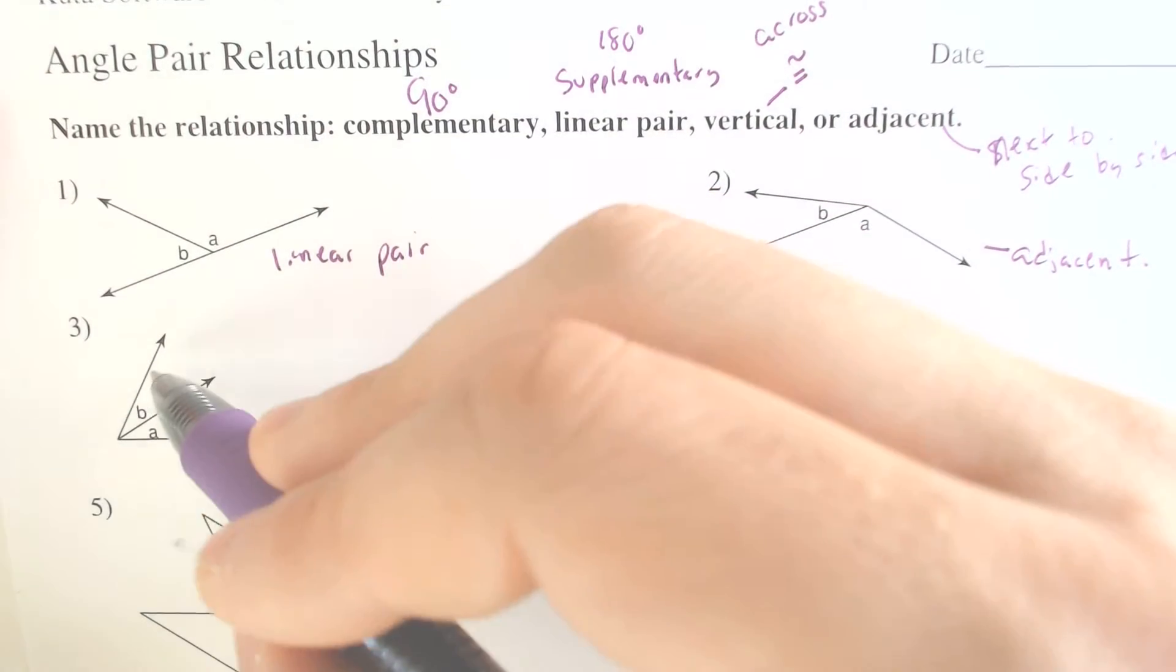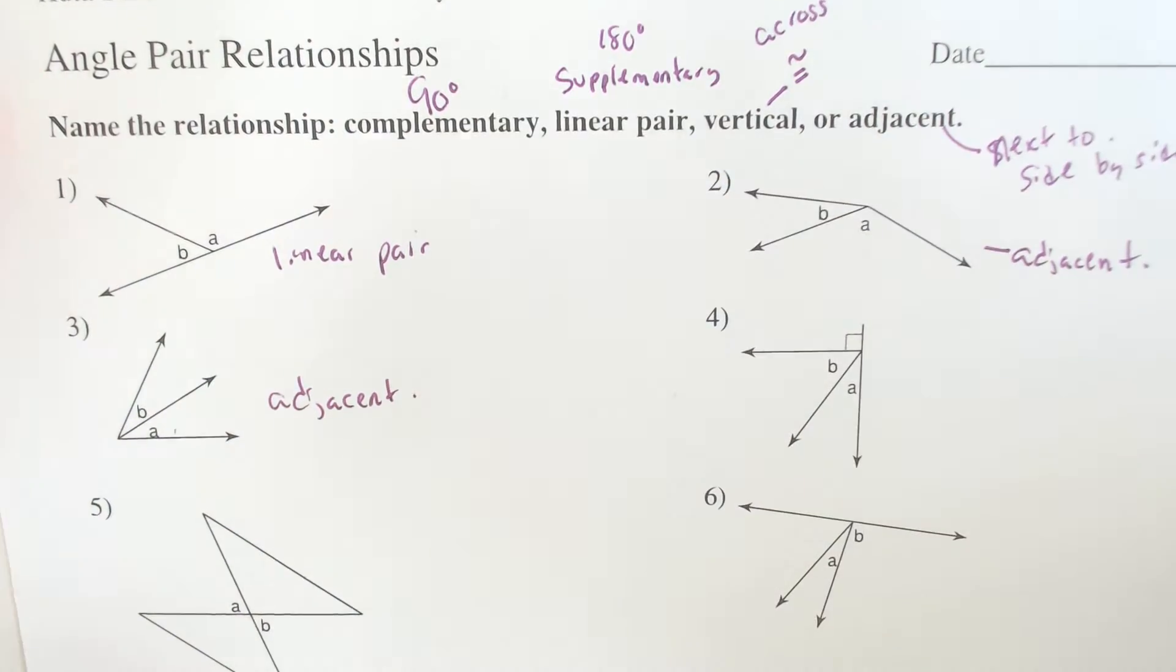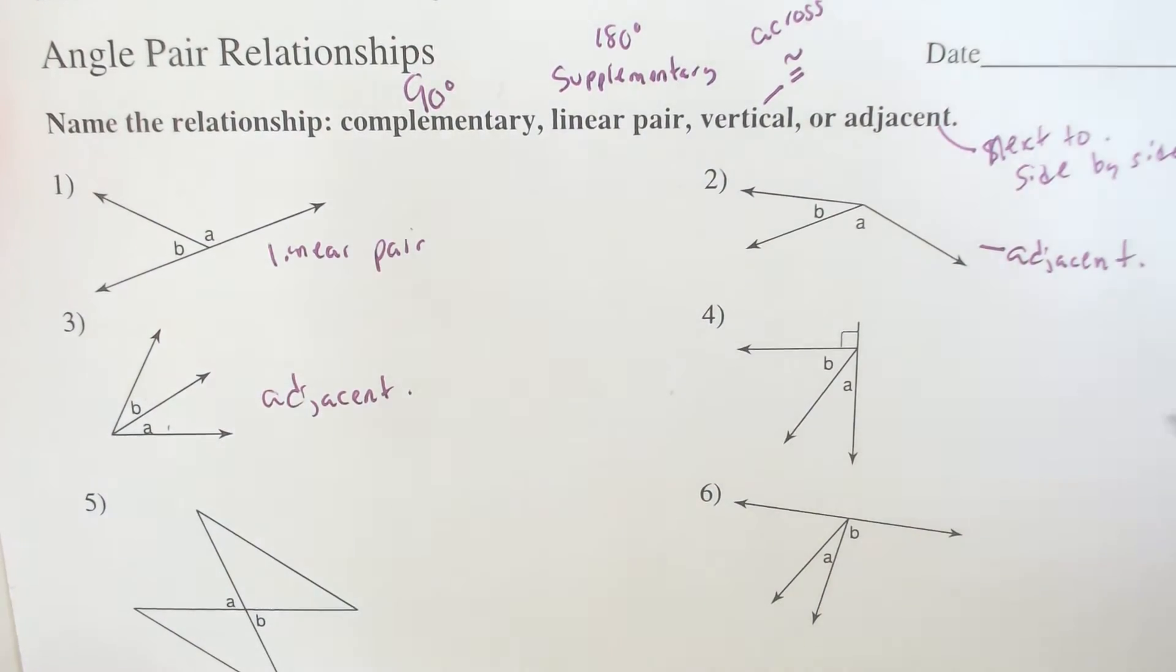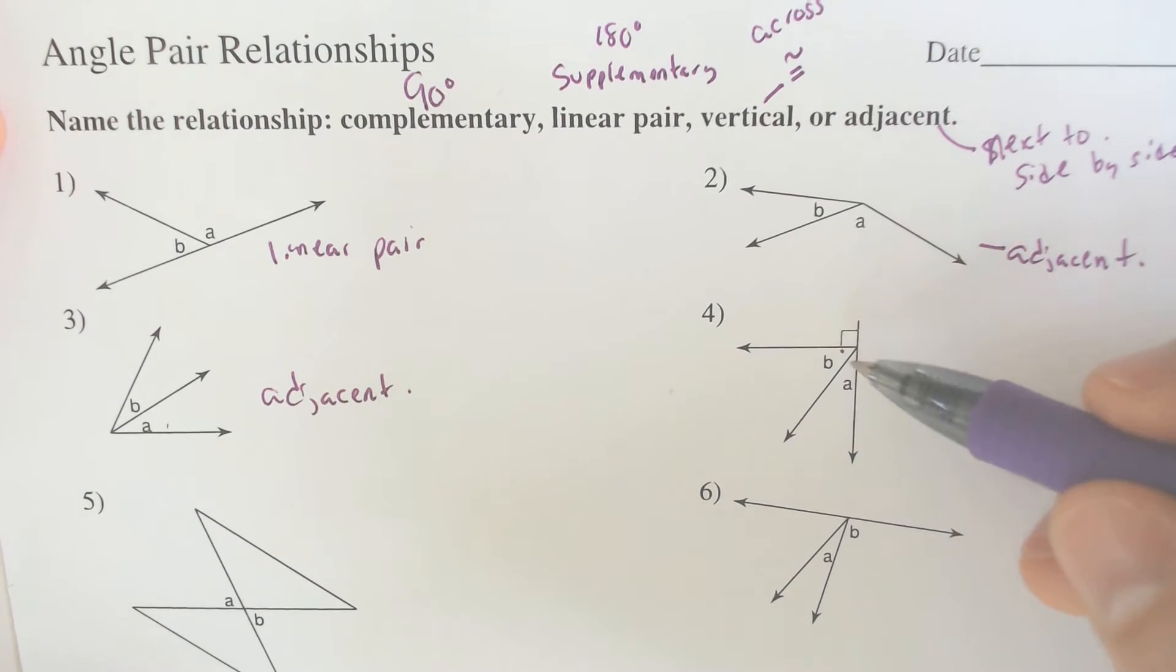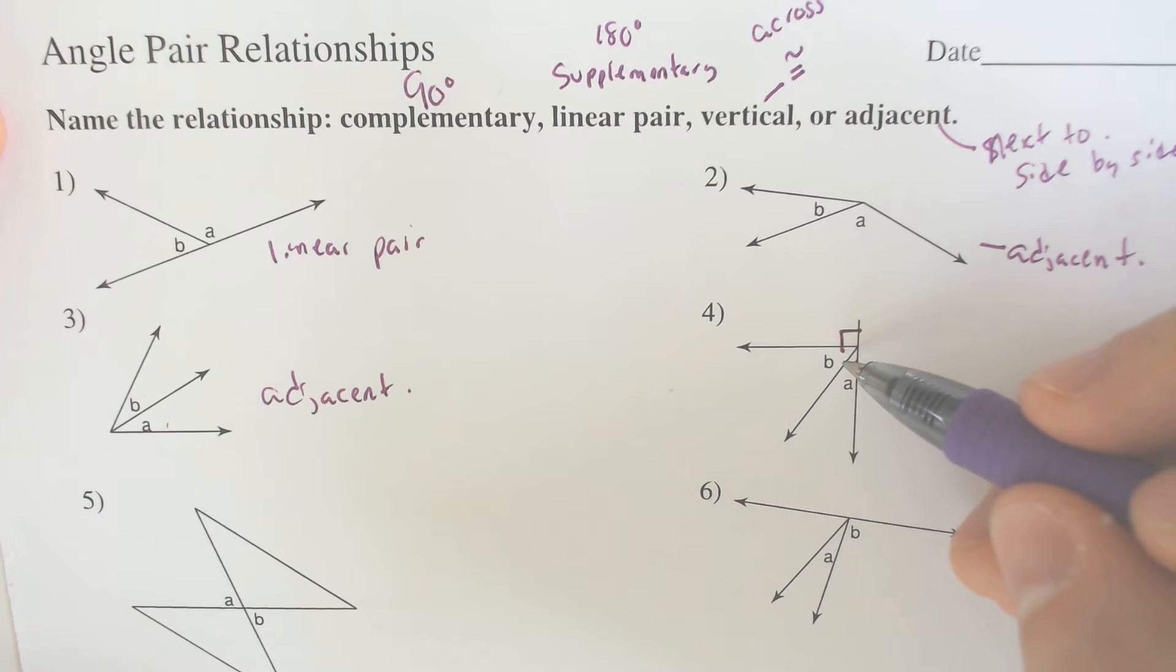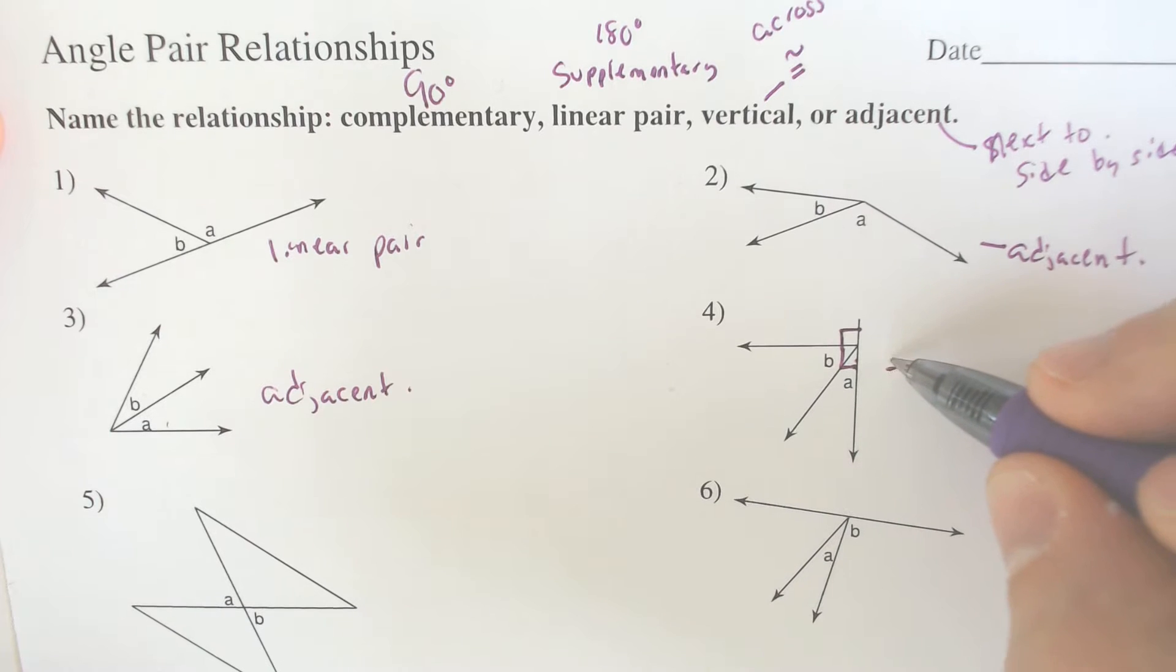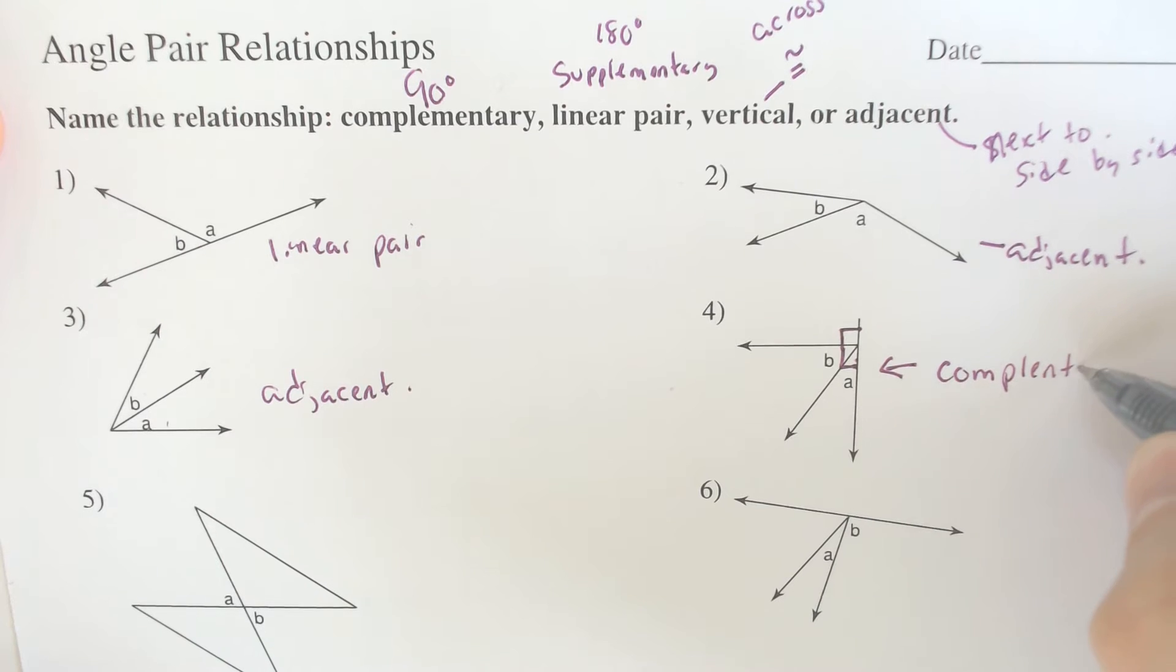Same with three, A and B are next to each other, so these are just adjacent angles. Whereas number four, A and B are next to each other, but you see how there's this right angle right here? That also means there's going to be a right angle on the other side for the line to add to 180, which means that these not only are adjacent but they are complementary because they add to 180 degrees.